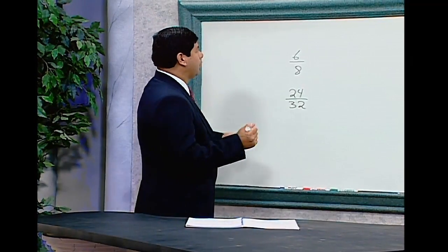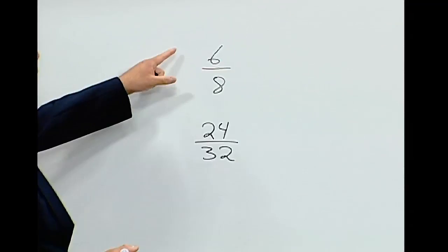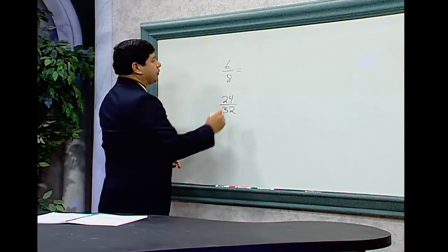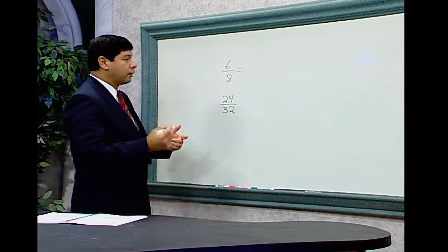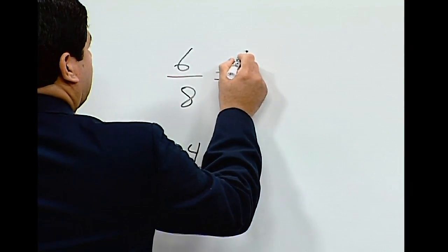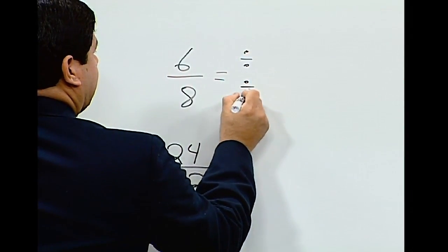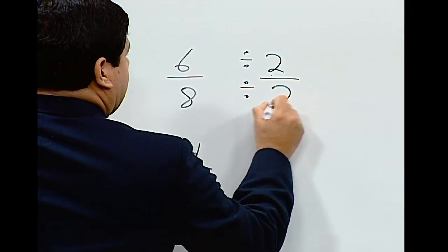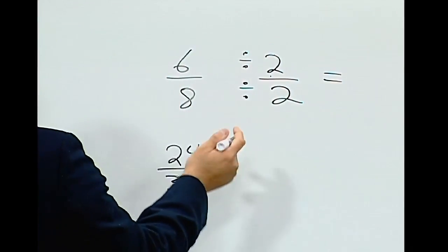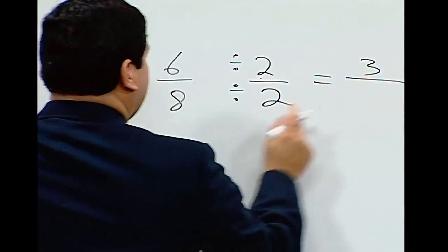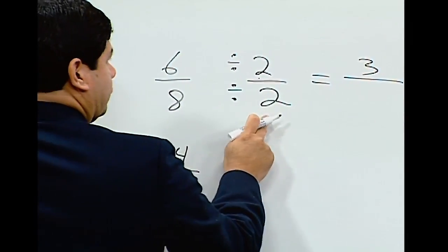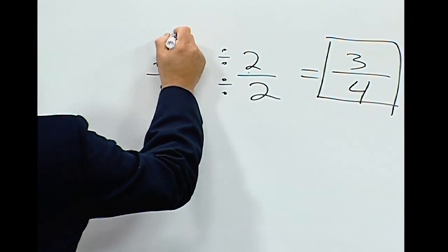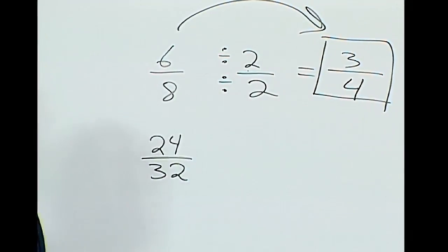Example number 1: the fraction 6 over 8. We know both 6 and 8 are even numbers, so we can reduce them by dividing both the numerator and the denominator by 2. 6 divided by 2 equals 3, and 8 divided by 2 equals 4. So 6 over 8 reduces to 3 fourths.